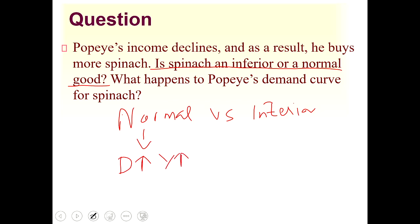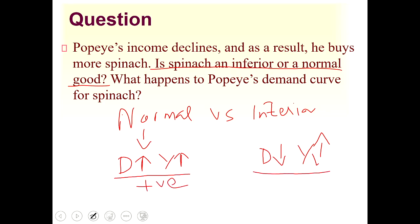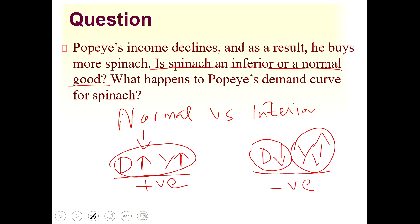For normal goods, demand increases when income increases — a positive relationship. For inferior goods, demand decreases as income increases — a negative relationship. Demand and income move together for normal goods, but move in opposite directions for inferior goods.